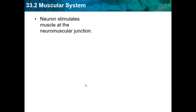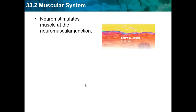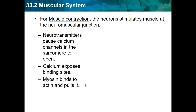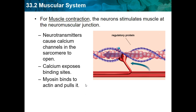A neuron stimulates muscles at the neuromuscular junction. Neurotransmitters cause calcium channels in the sarcomere to open, calcium exposes binding sites, and myosin binds to actin and pulls it. As the sarcomere shortens, the muscle contracts.